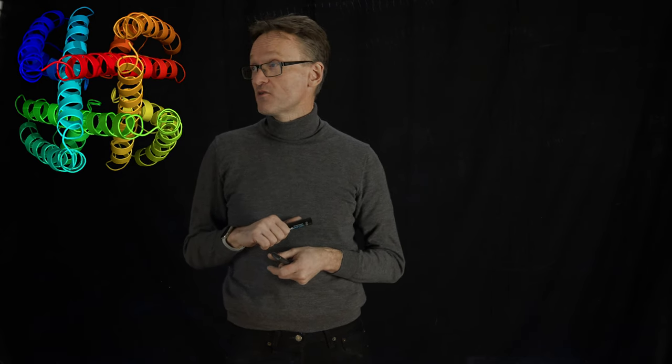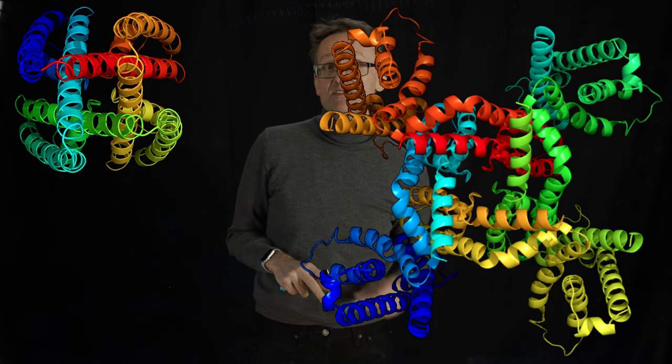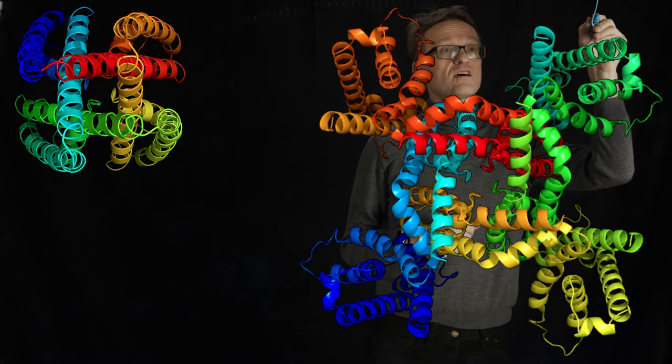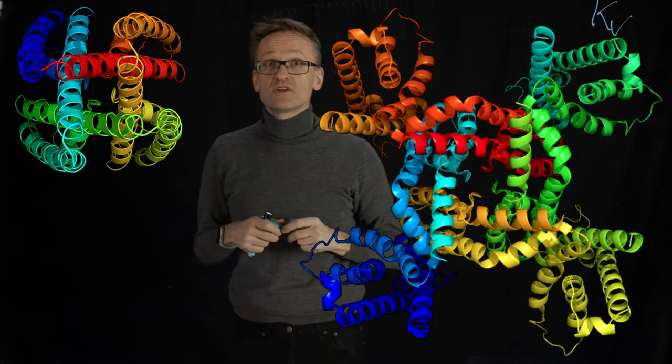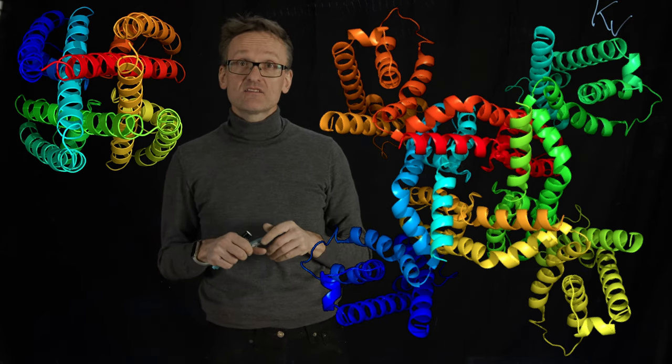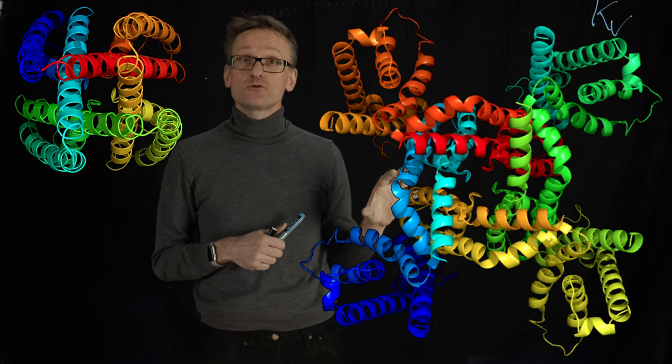Interestingly enough, we have relatives of these proteins in humans, in particular this one. This is a so-called KV channel. I'll have to draw that up here. KV. K is because it's conducting potassium ions, and V is that it's voltage-gated, meaning that when the voltage across the bilayer changes, we will open or close this channel.